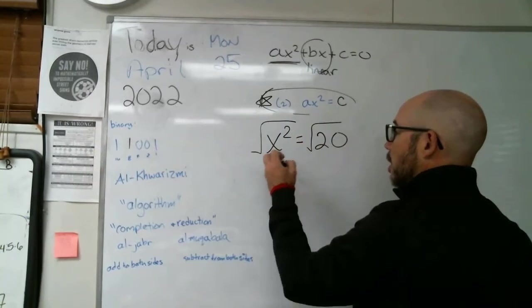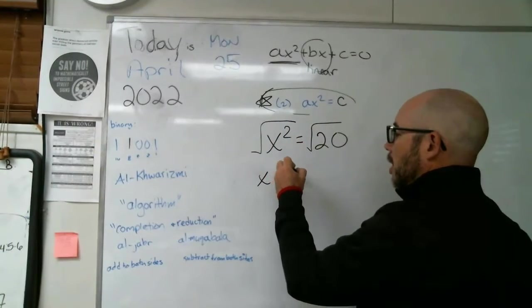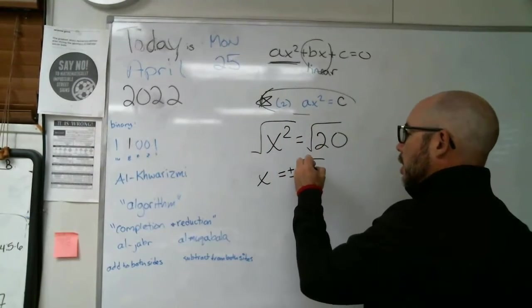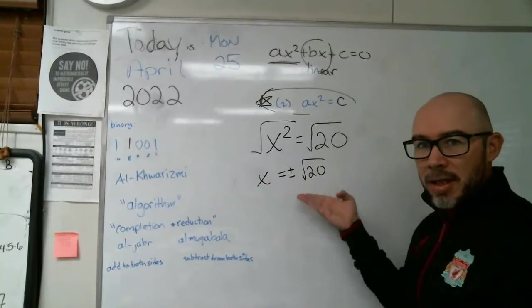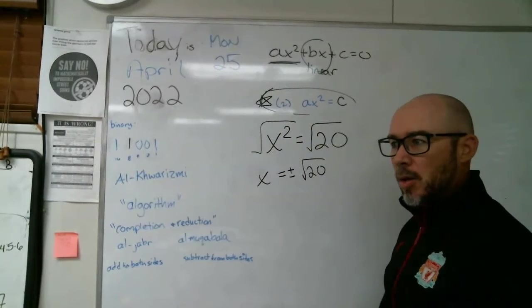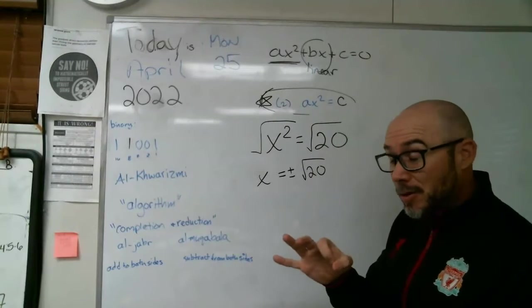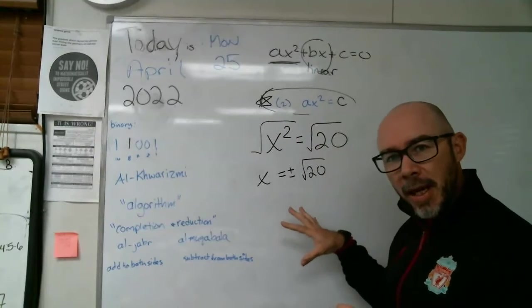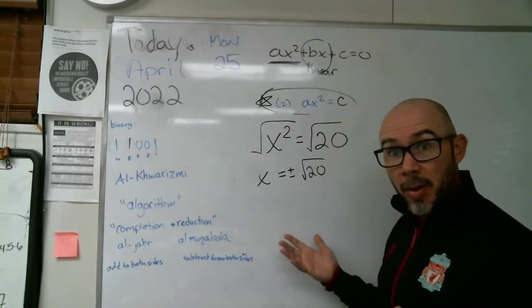We would solve this exactly the same way as we did those other ones by just finishing off by taking the square root of both sides. And at this point, I want to be careful here and really treat this like it's math, right? And so if I want to get an exact answer, I'm going to have to break this down and see if there's any perfect squares in there.